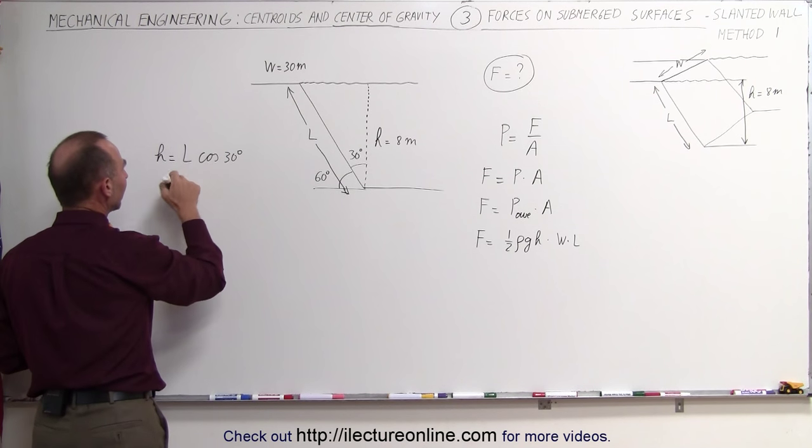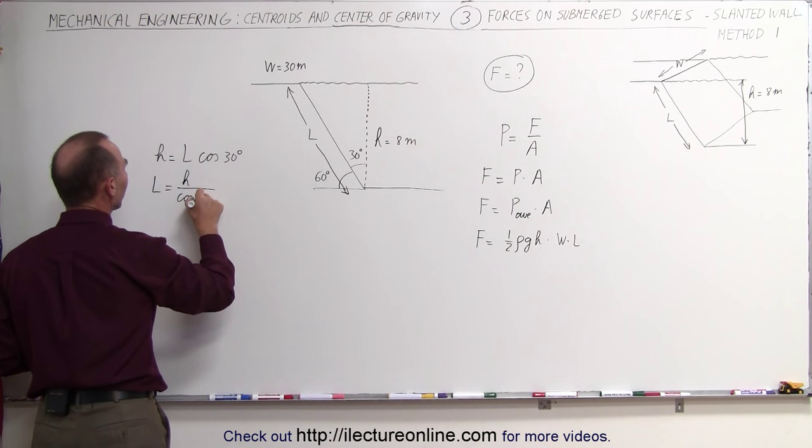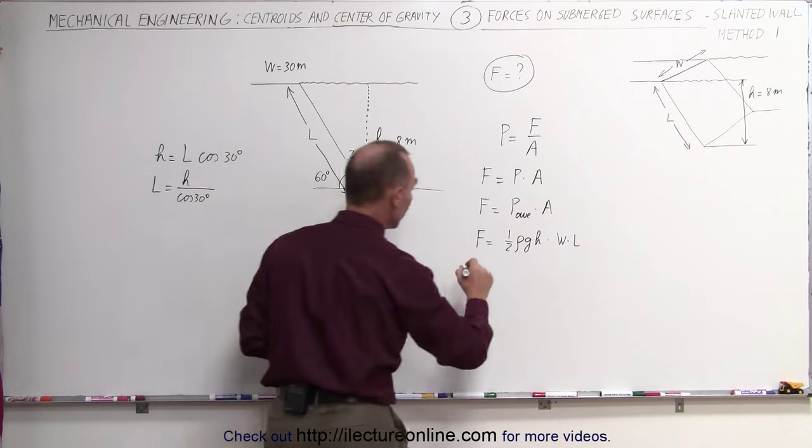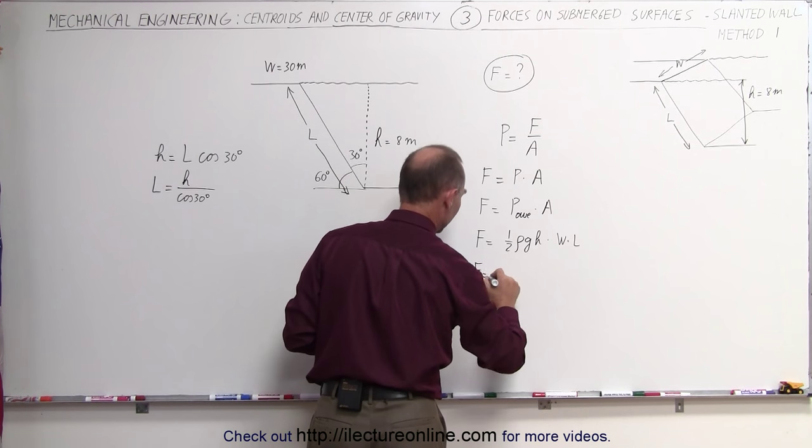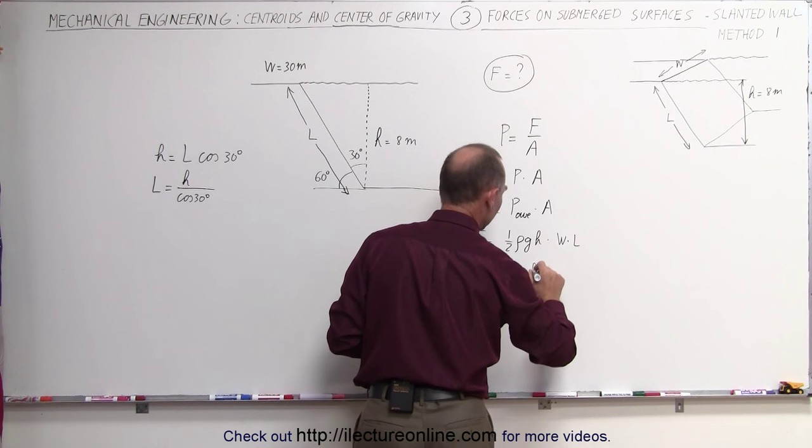So instead of writing L we can write L is equal to H divided by the cosine of 30 degrees and substitute L for that. When we do we get the following, F is equal to one-half the density of the water times G times H, which is the depth,